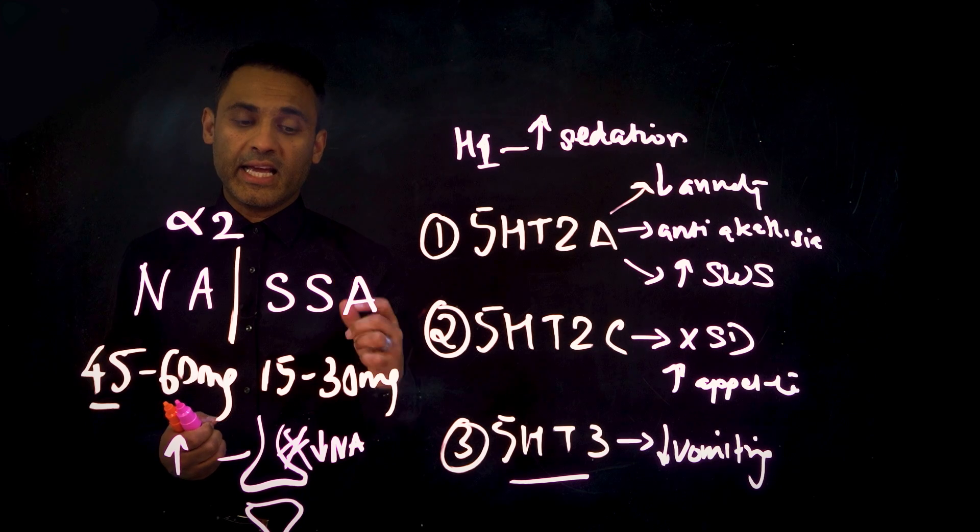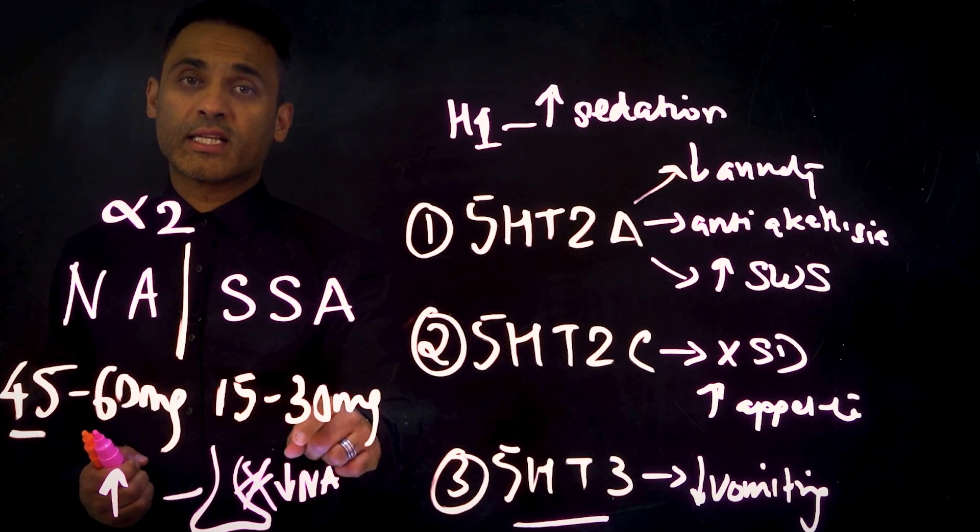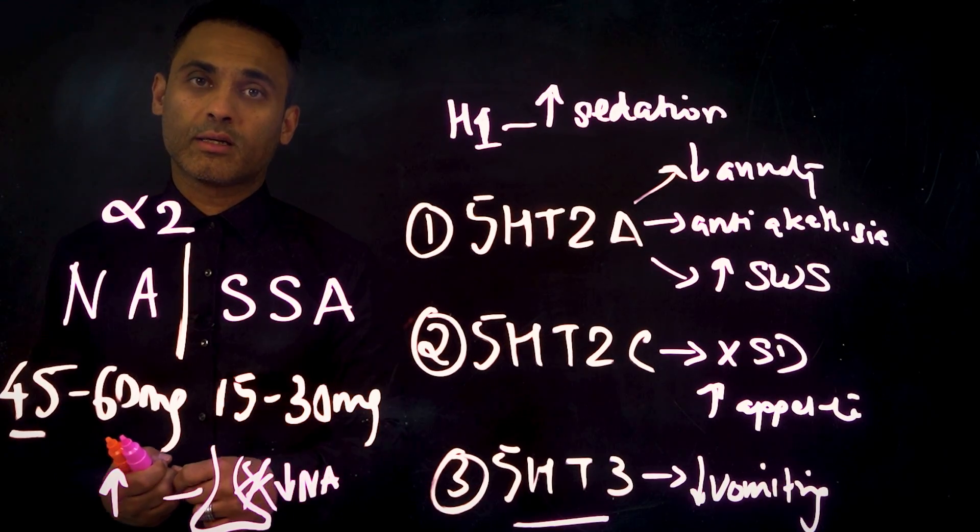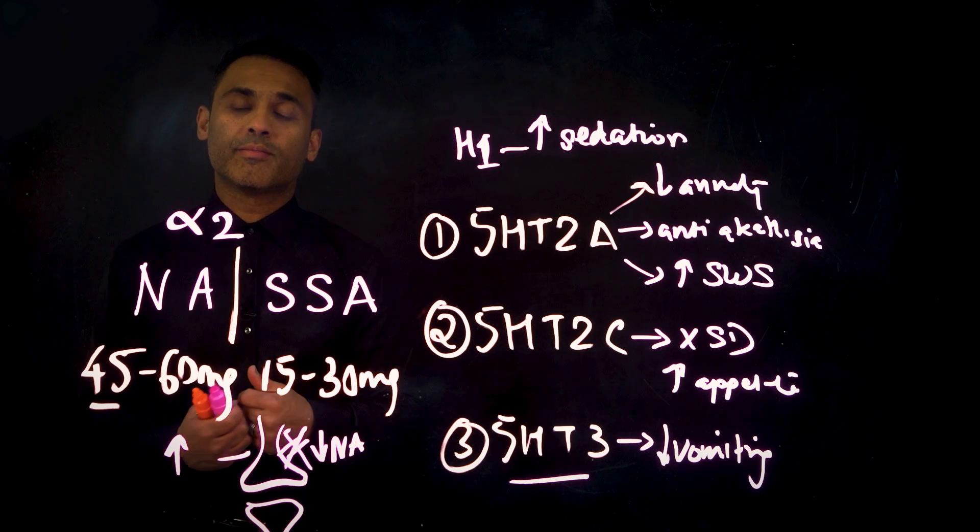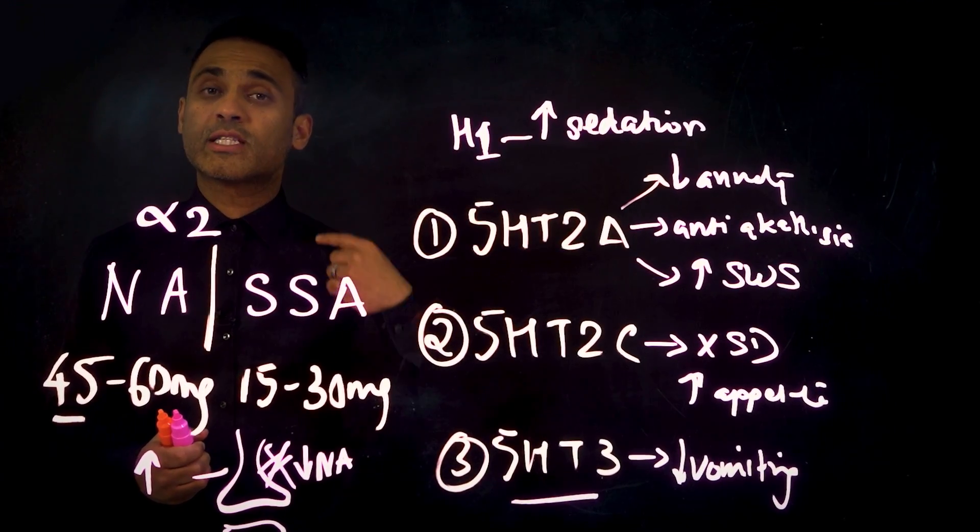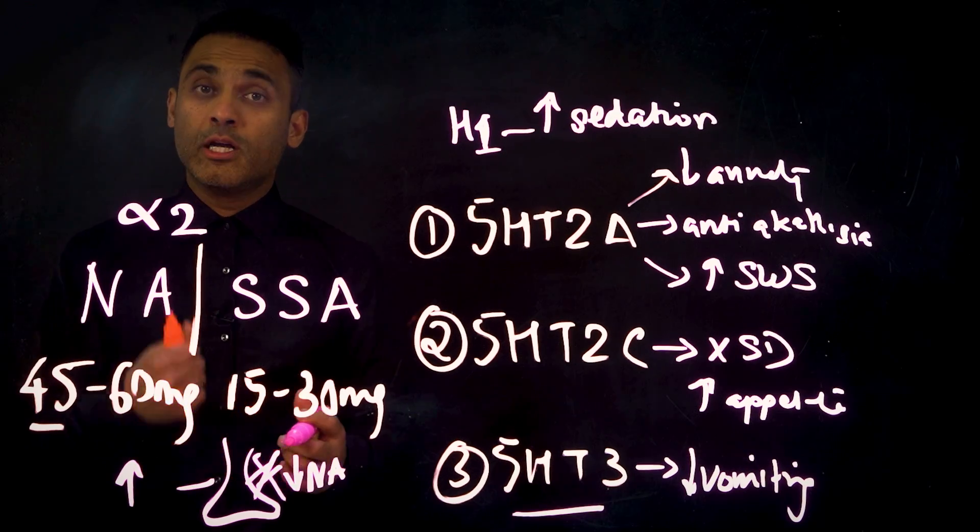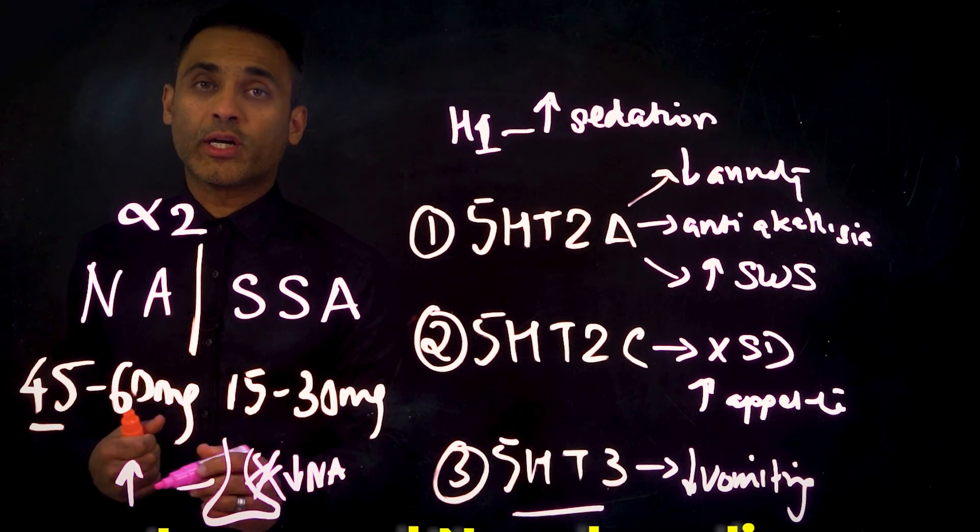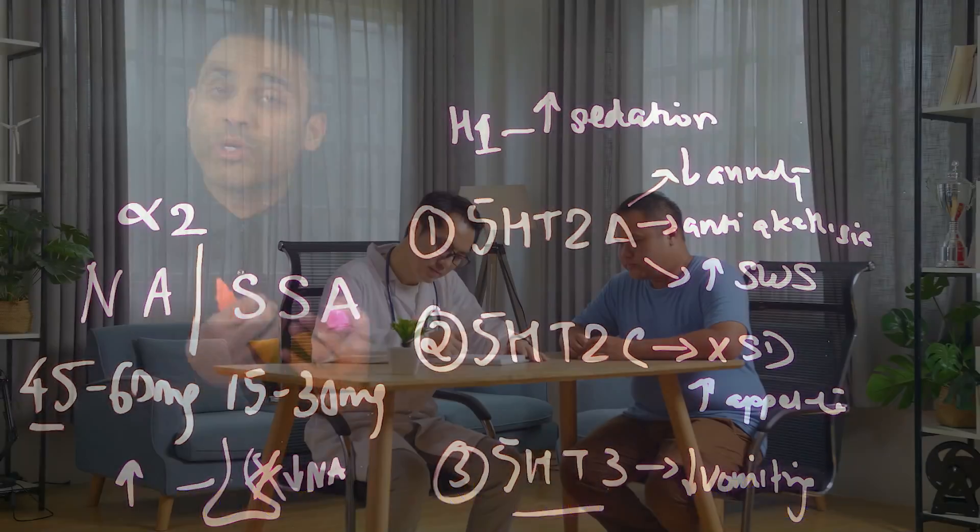And mirtazapine is much more selective for the presynaptic alpha-2 rather than the postsynaptic alpha-2. And it's also much more selective for the central alpha-2 receptor. So that's one property. We've got increased noradrenaline, which we know is beneficial in the treatment of more severe forms of depression.